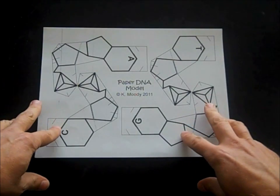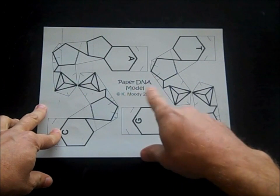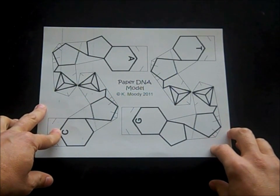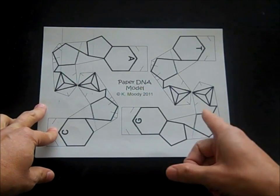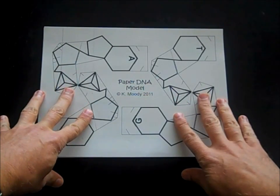Okay, so on each of these sheets, there are four nucleotides, one of each of the types that are found in DNA. And if you want to make a double helix that makes a complete turn, you're going to need six of these sheets.